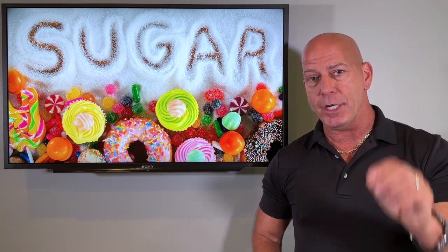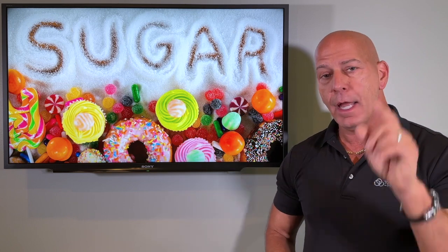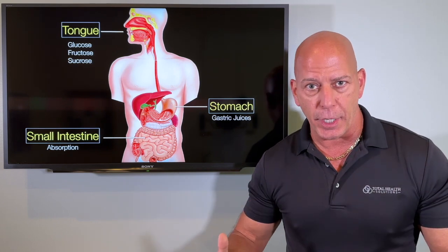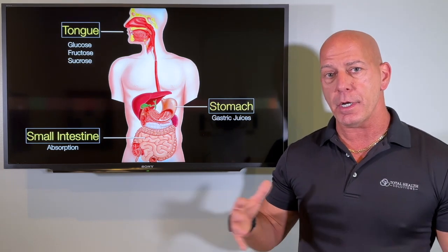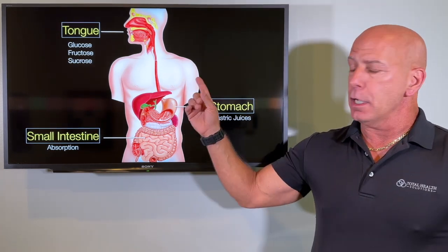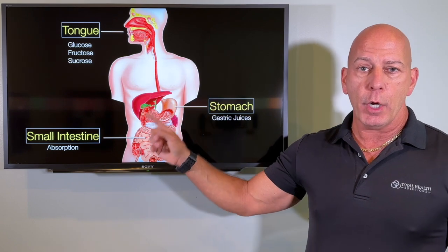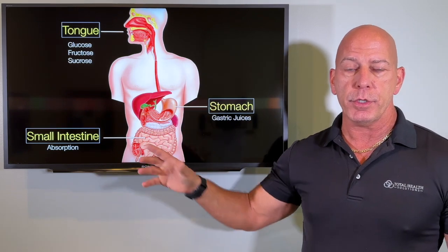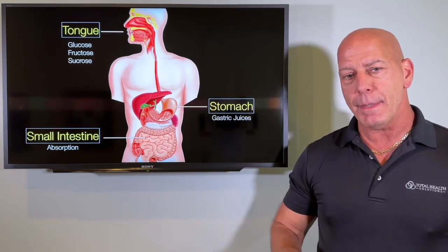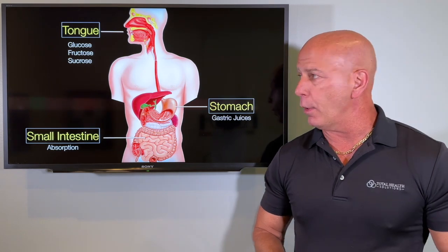Let's jump right into why you should be avoiding sugar almost at all costs. First of all, let's talk about what sugar does when it gets inside your body. Sugar can come in many different forms, but primarily it's going to be glucose, fructose, and sucrose. Let me explain what that is a little bit.